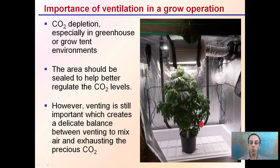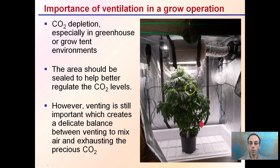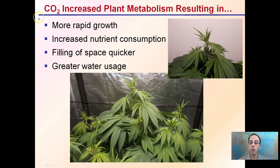The importance of ventilation in a growth space: ventilation is still important. CO2 depletion, especially in greenhouses or grow tent environments, can be quite common because of the confined space. The area should be sealed to help better regulate CO2 levels so you're not wasting CO2 out vents. But it's important to keep in mind that ventilation is important, which creates a delicate balance between venting out hot air and exhausting out the precious CO2 you've added. Here, the CO2 is added about midway through the grow tent, and the exhaust port is at the very top of the tent. CO2 can increase plant metabolism, which can cause more rapid growth, increased nutrient consumption, filling the space quicker, and greater water usage.